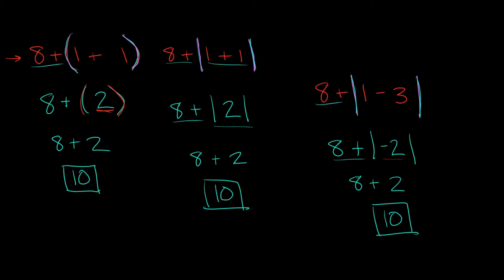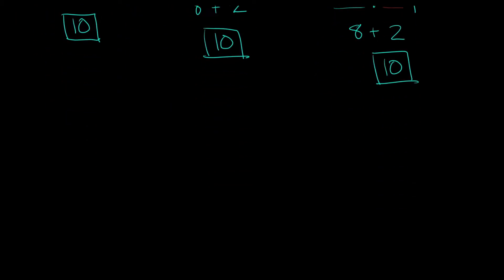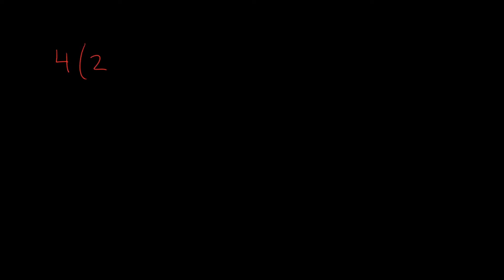Another point: in pre-algebra and algebra, we also use parentheses to show multiplication. So for example, if I write 4(2), whenever you see a number next to a set of parentheses like this, that always means multiply. So I could rewrite this as 4 times 2. These are the exact same thing, just two different ways of writing it. And 4 times 2 simplifies to 8.